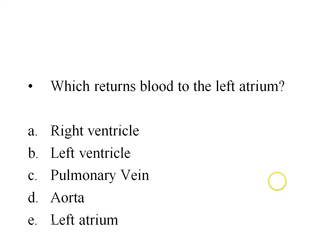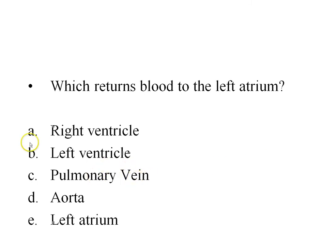Which returns blood to the left atrium? The left atrium is going to be receiving oxygen-rich blood from the lungs. Lungs refers to pulmonary. Since it's returning to the heart, it's a vein. Pulmonary vein is the right answer, C.